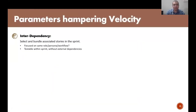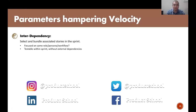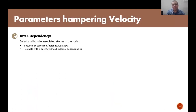Let's get into product velocity, the first metric. The first parameter is interdependency. We all know how to prioritize the backlog for a product sprint. Generally we talk about value or impact and then use estimation parameters, but that is not sufficient. It is very important how you bundle the stories for a particular sprint. If stories are interrelated and associated for a particular role, persona, or workflow, the possibility of turning them around quickly is much higher, because people will be focused on similar functionality and testing will be much easier and faster.